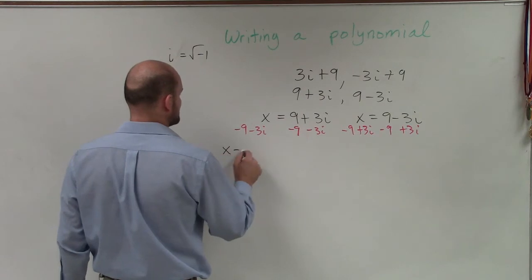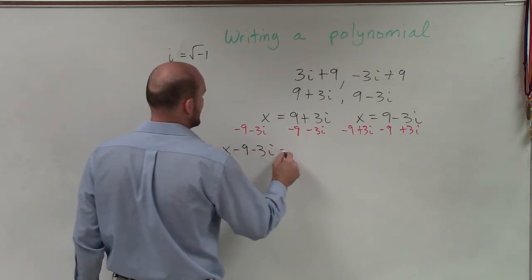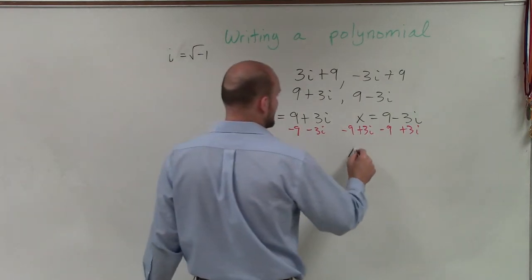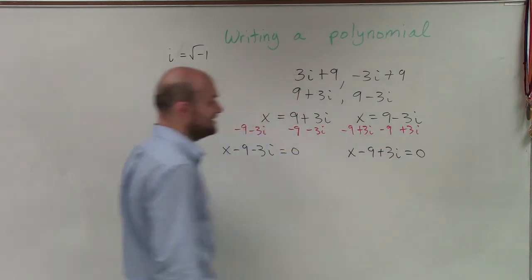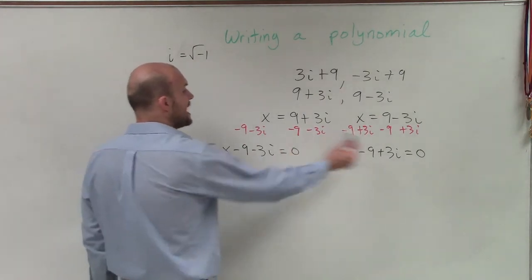So therefore now I have x minus 9 minus 3i equals 0. And over here I have x minus 9 plus 3i equals 0. Now I have them as my variable factors.